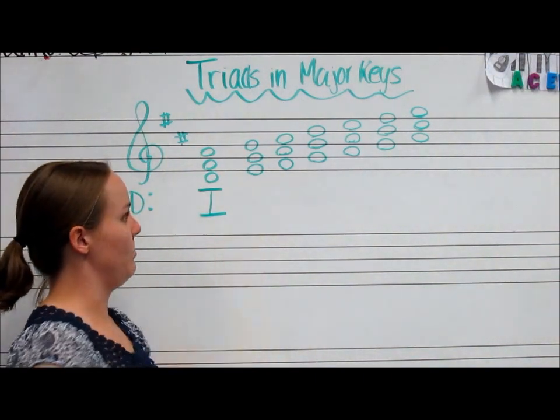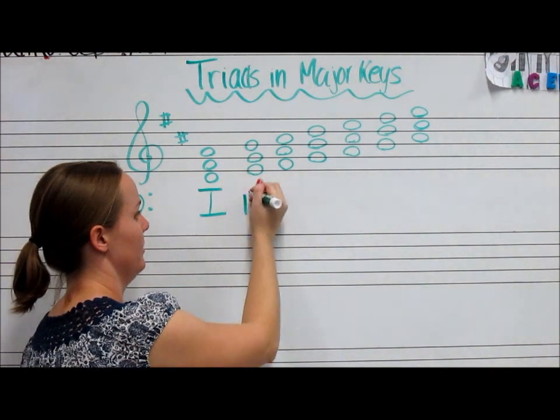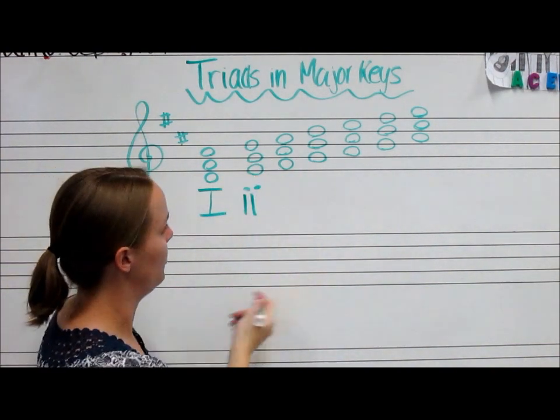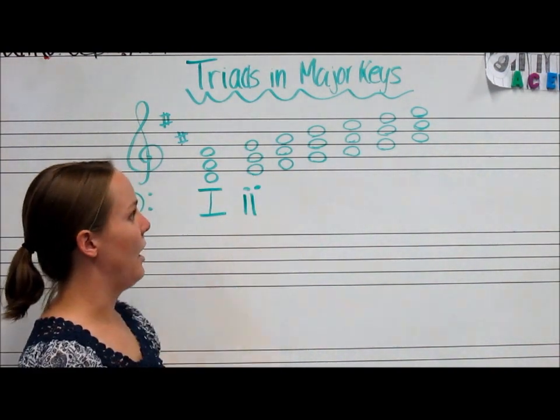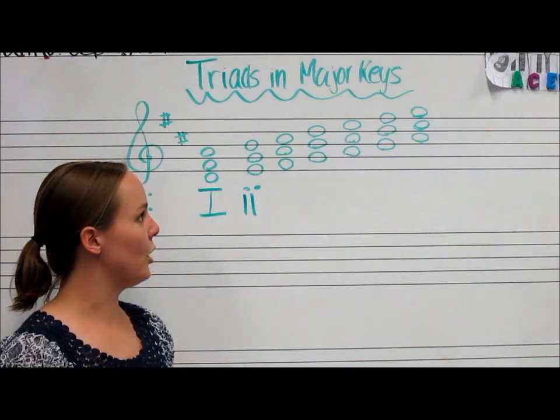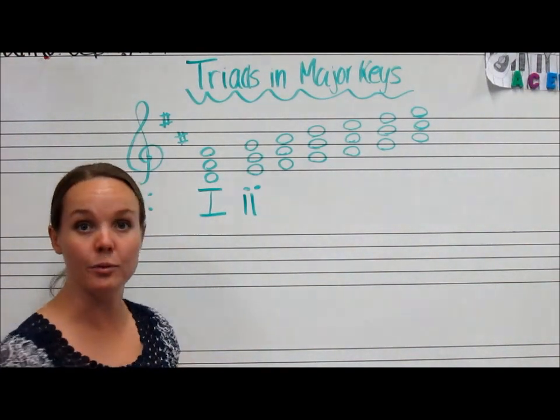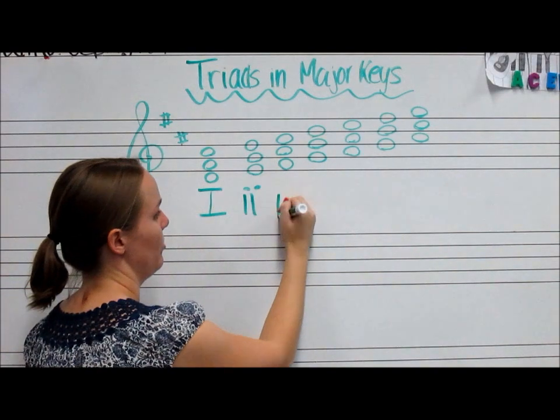Next we have E, G, B, which is a minor triad. So we'll call that a lowercase ii. We have F sharp, A, C sharp, which is a minor triad, so it will be lowercase Roman numeral iii.